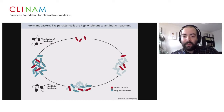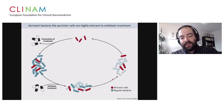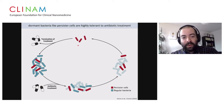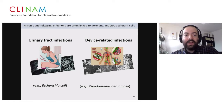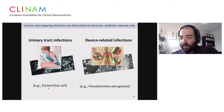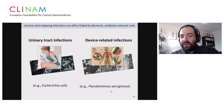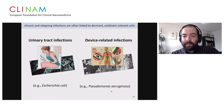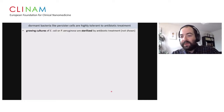Persister cells are phenotypic variants of normal bacteria in a dormant state. If you treat these with drugs, all the regular cells die, but persisters survive. When drug treatment is terminated, these persisters can wake up and replenish the population. This has been implicated in all kinds of chronic and relapsing infections, like urinary tract infections caused typically by E. coli, or device-related infections caused by Pseudomonas aeruginosa — the two major organisms we study in my group.